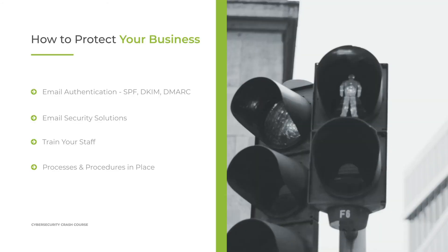So how can you protect your organization? First, set up email authentication. SPF, DKIM, and DMARC are three authentication protocols that can cut down on spoofing and faking of your email addresses. It's not perfect and won't stop everything, but it will eliminate a good portion of those bad emails. Next, use an email security solution — modern solutions are very good at spotting attempts to masquerade as your domain and can add alerts so individuals are warned that an email is potentially malicious.